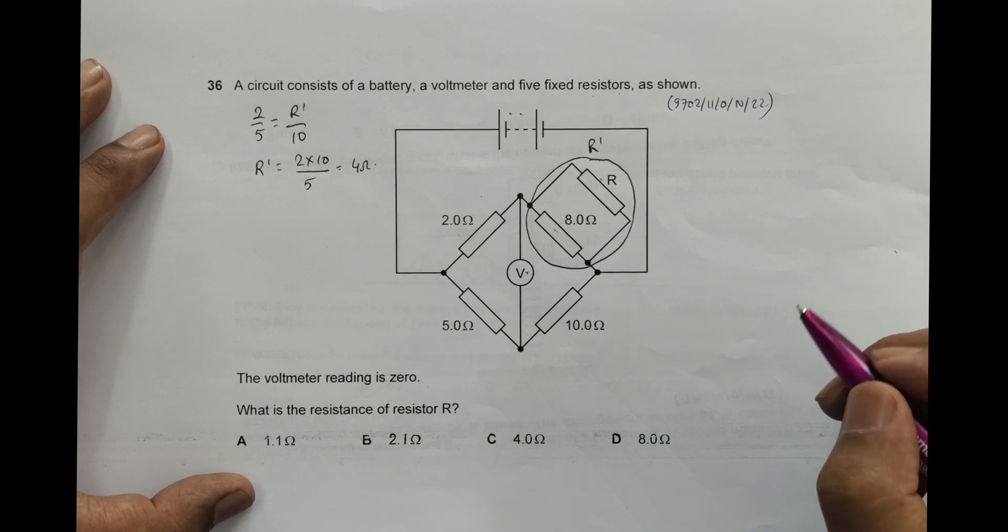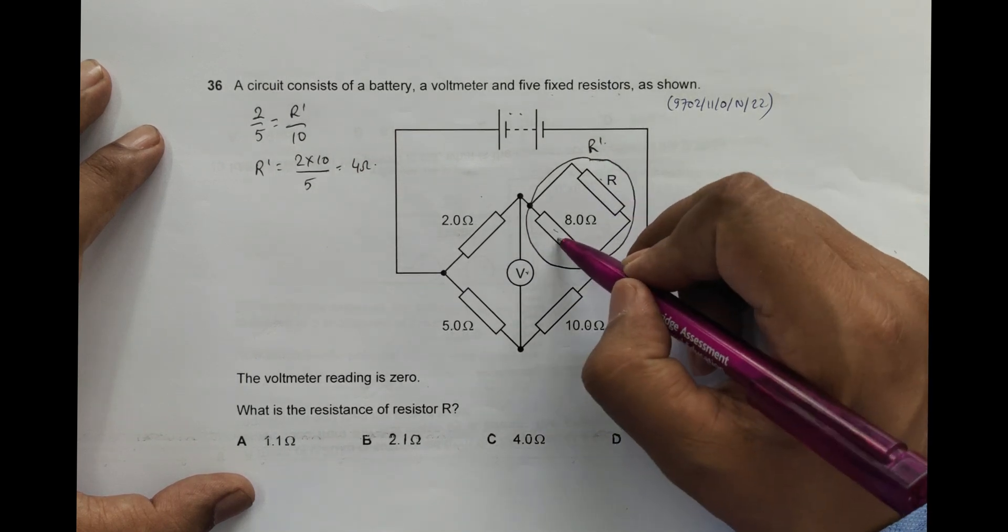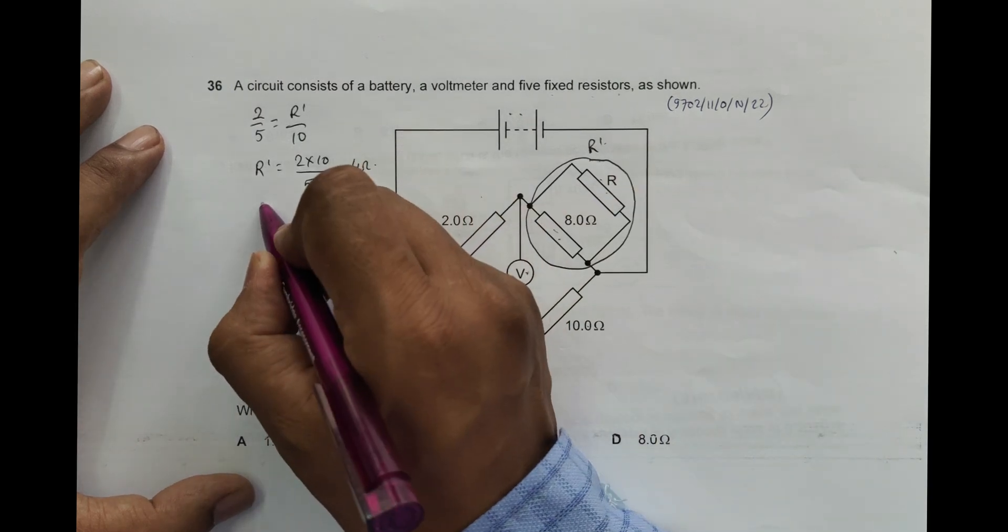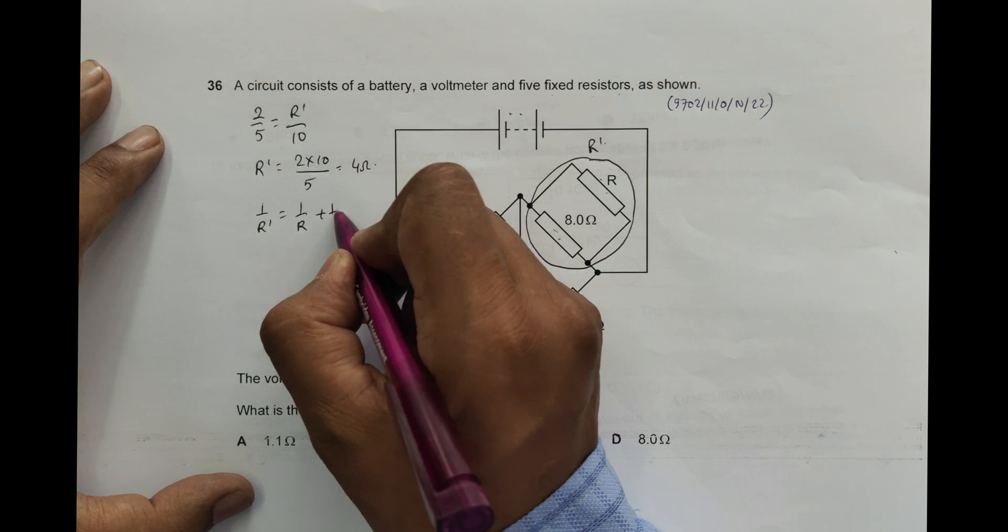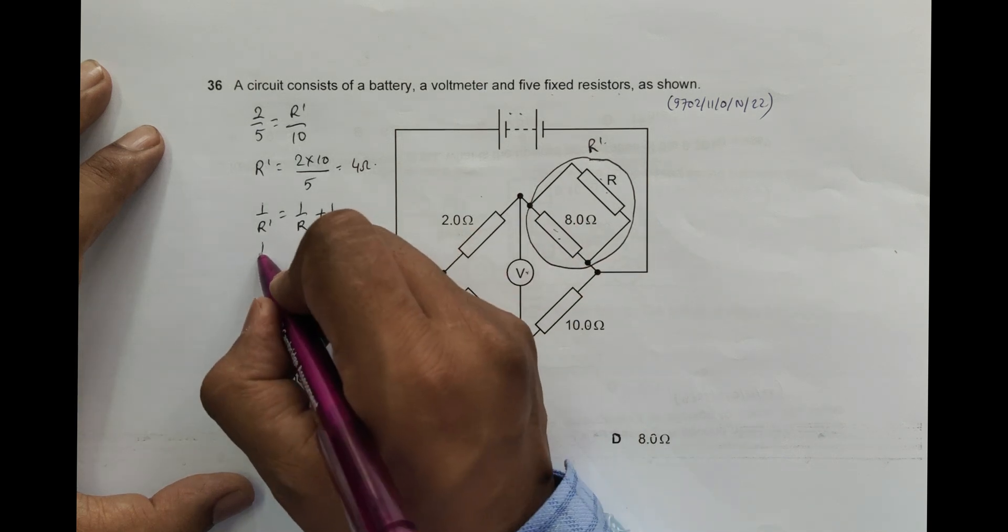Now this R prime is the parallel combination of 8 and R. So I must have 1 by R prime should be equal to 1 by R plus 1 by 8, that is 1 by 4.